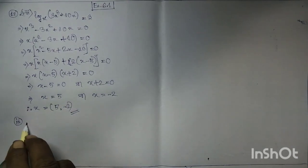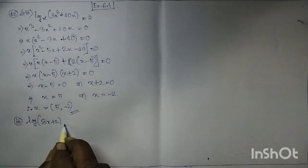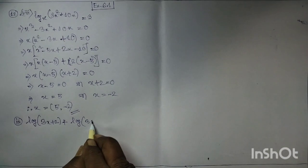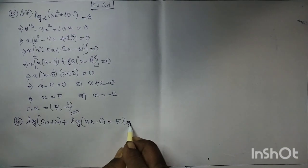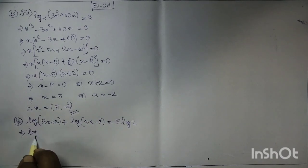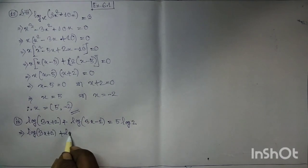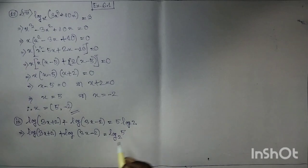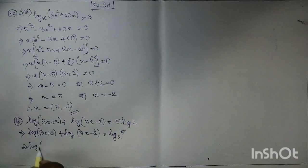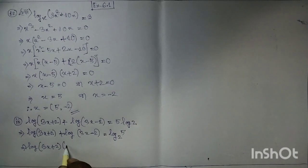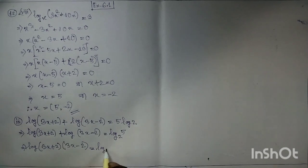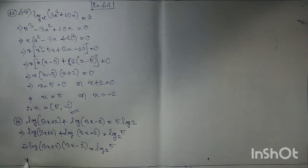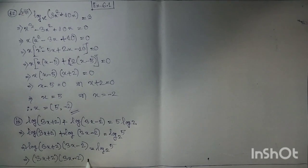Next, question 9: log√(6+2) plus log√(6-2) equal to 5 log 2. This implies log√(6+2) plus log√(6-2) equal to log 2⁵, which equals log√(6+2) multiplied by √(6-2) equal to log(5+2).